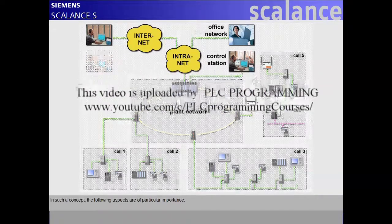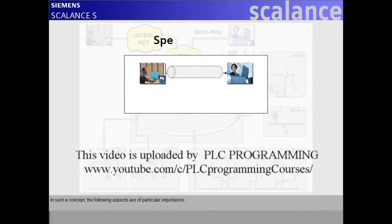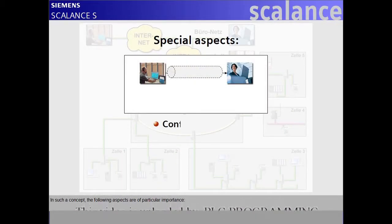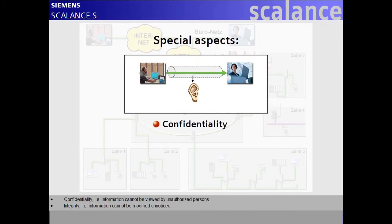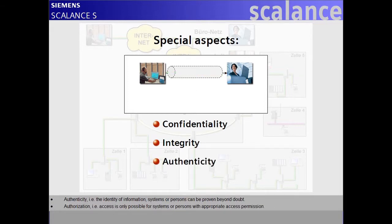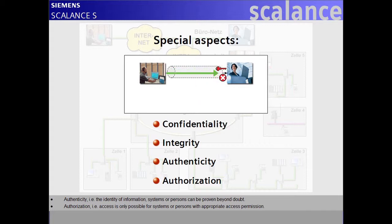The following aspects are of particular importance. Confidentiality, i.e. information cannot be viewed by unauthorized persons. Integrity, i.e. information cannot be modified unnoticed. Authenticity, i.e. the identity of information, systems, or persons can be proven beyond doubt. Authorization, i.e. access is only possible for systems or persons with appropriate access permission.